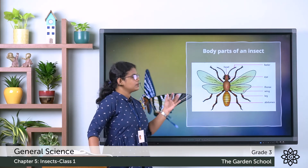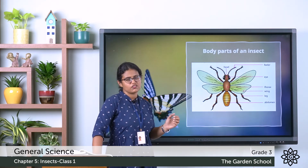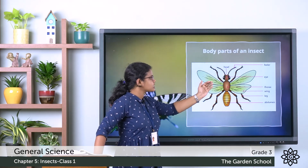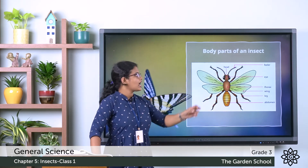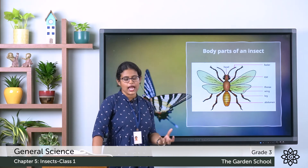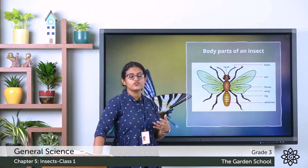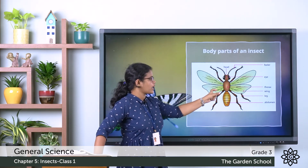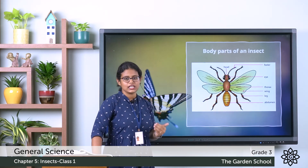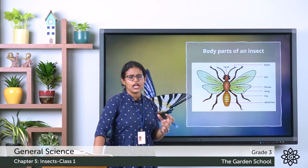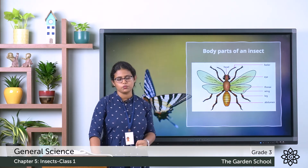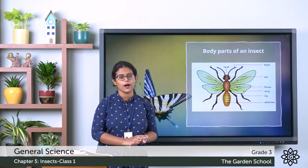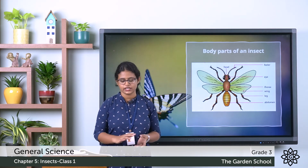So the body of an insect is divided into three main parts: the head, the thorax, and the abdomen. The head has a pair of feelers, eyes, and a mouth. The thorax bears the wings and legs. The abdomen is the important part of the insect's body. That is all about the body parts of an insect.